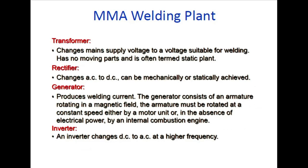The MMA welding plant has four types of machines: transformer, rectifier, generator, and inverter. Transformer changes main supply voltage to a voltage suitable for welding and has no moving parts - it is called static plant. Rectifier converts AC to DC. Depending on the welding condition, you can choose the appropriate machine type.